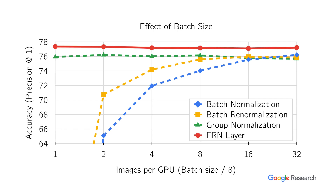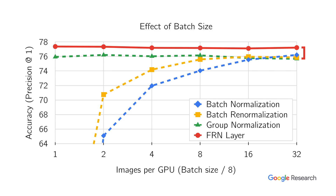Coming back to our graph, we see that FRN gets rid of all the earlier mentioned issues. It retains performance for small batch sizes and outperforms all the methods at all batch sizes.